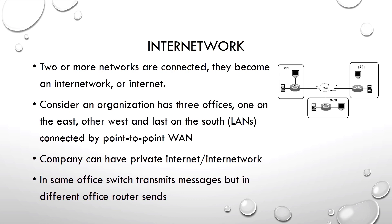Consider an organization with three offices located anywhere — east, west, or south. Each office can be a LAN, and the three LANs can be interconnected through point-to-point WAN. When interconnected through point-to-point WAN, it forms an internetwork. A company can have a private internet or internetwork.